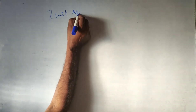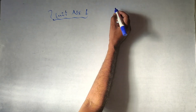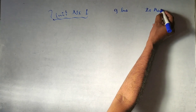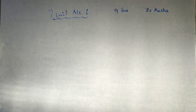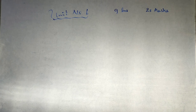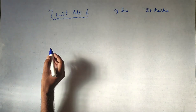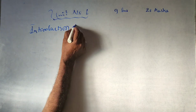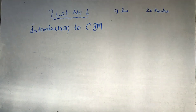What is the first unit? Unit number one. In the previous class I told you that it is totally nine hours — nine hours of lectures, and totally 20 marks. 20 marks in the final exam. 20 marks is not a small number, it is a very good number. You can concentrate. It is only a nine-hour chapter. The unit name is Introduction to CIM and Automation.